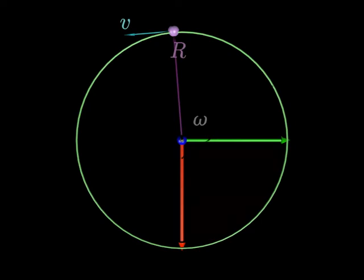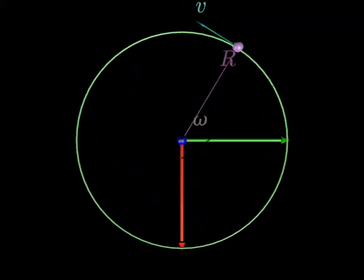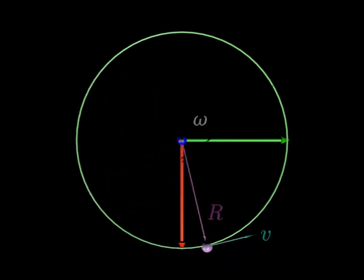The purple thing, R, is the radius of the thing moving in a circle. And V is the velocity of the little pink particle that's moving around in a circle, right? So if you see it moving around in a circle, there it goes. And with this, you have V equals Omega R.